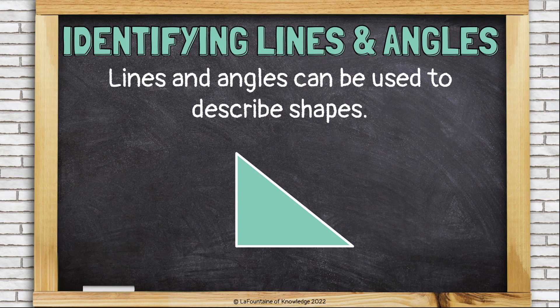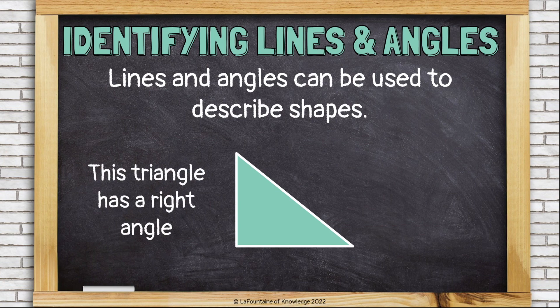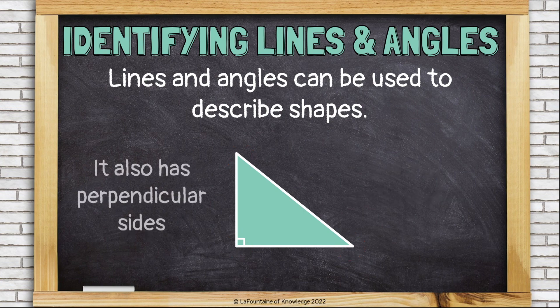We can identify lines and angles in shapes. This triangle has a right angle and two acute angles. It also has perpendicular sides. They meet and cross to form that right angle.